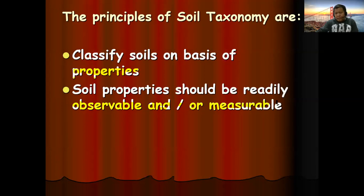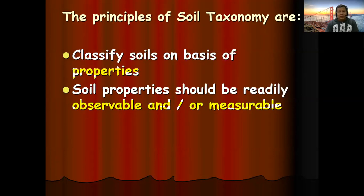For example, in classifying people, height is measurable. Those 5'8 and above are tall, those around 5'2–5'3 are medium height, and those 5'2 and below are short. So it should be observable and measurable so that we can classify things.